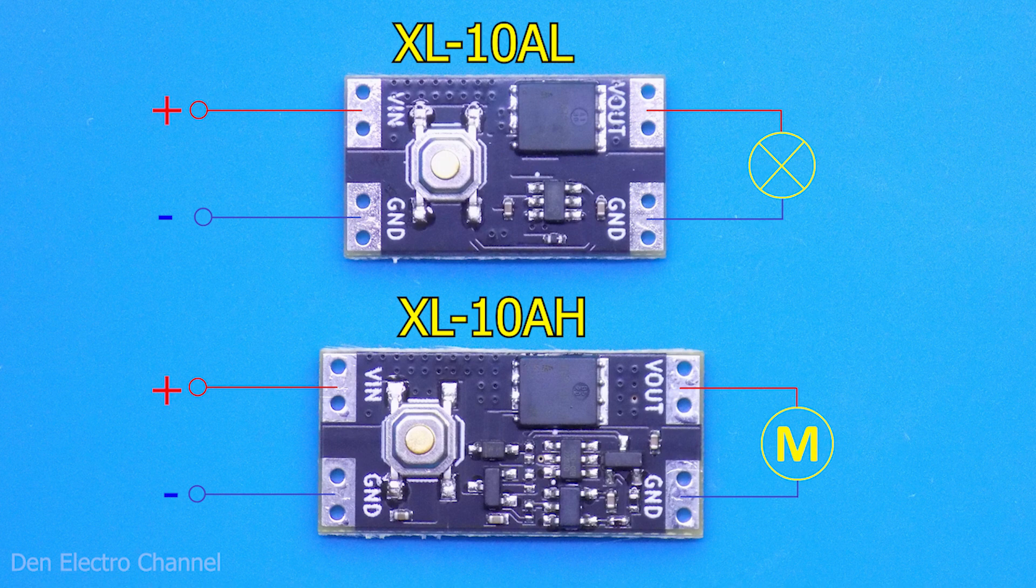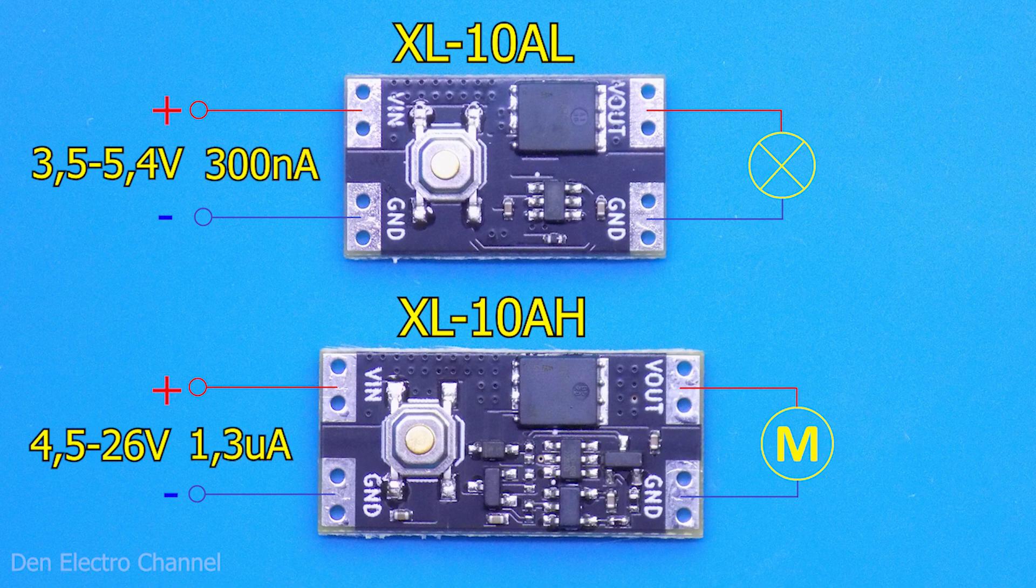The first low voltage module operates from 3.5 volts to 5.4 volts. The second module is higher voltage. Its supply voltage range is much larger, from 4.5 to 26. When disabled, in standby mode, the first module consumes very little current, only 300 nanoamps. The second is 4 times larger than 1.3 microamps.